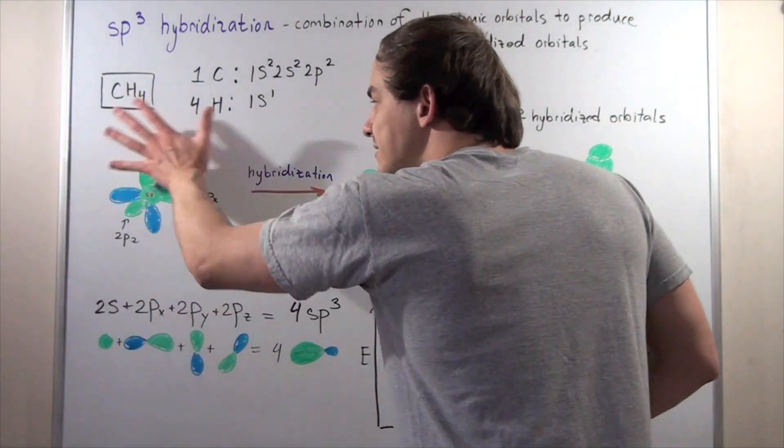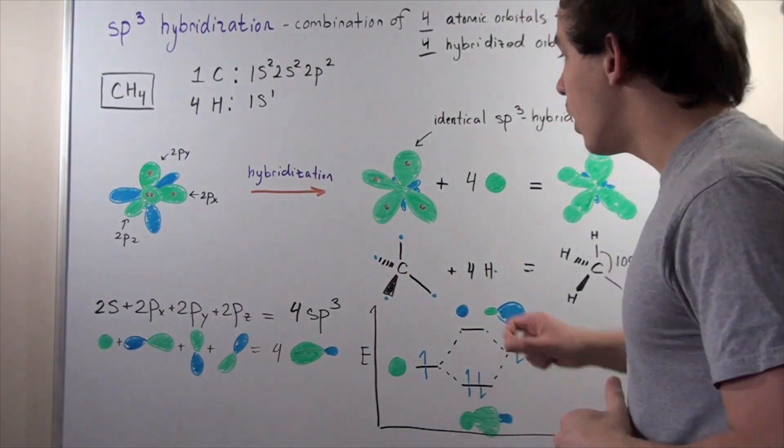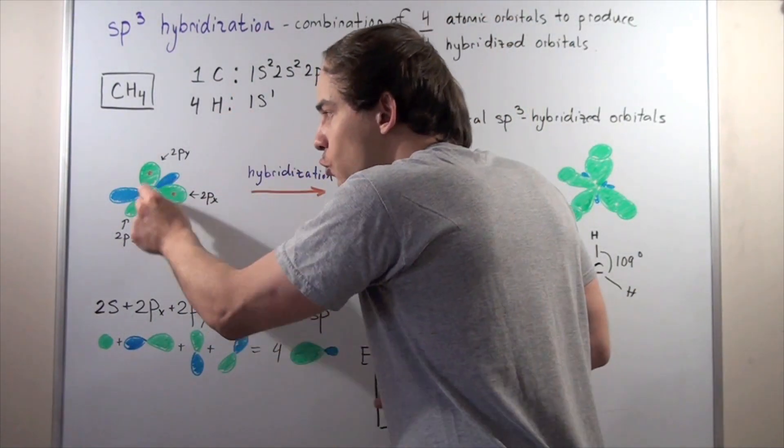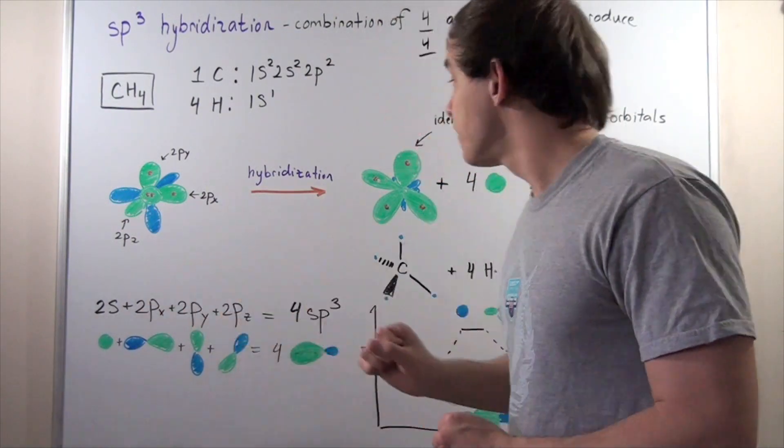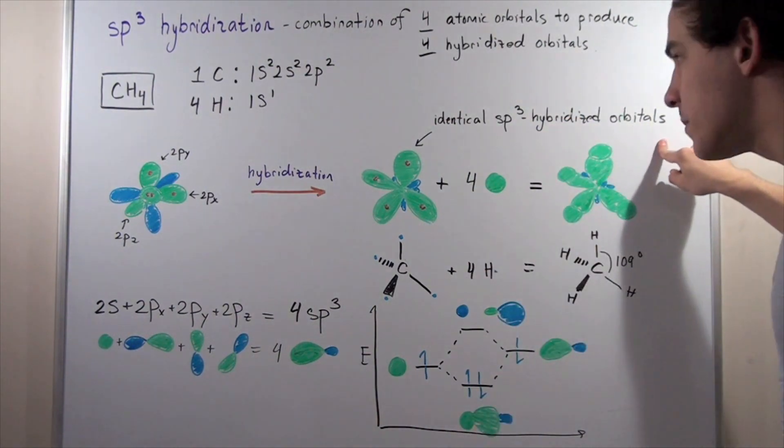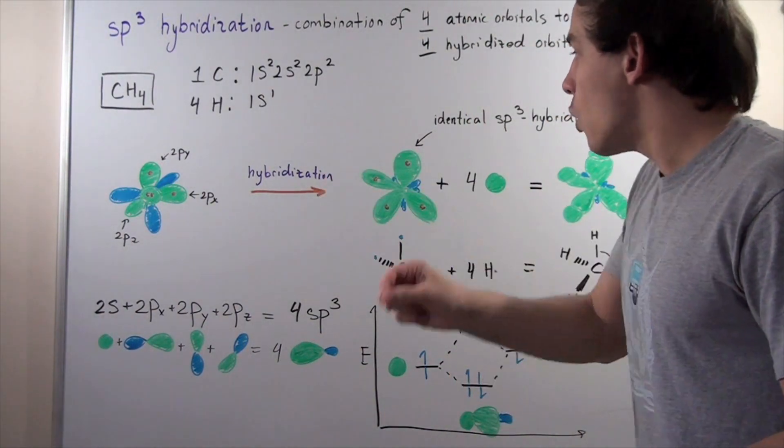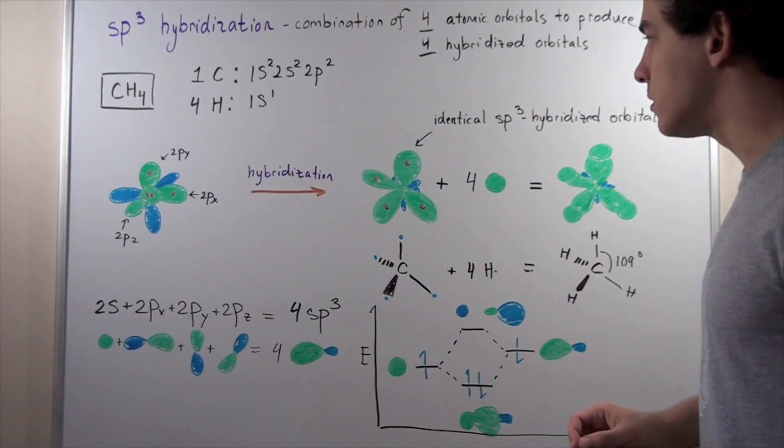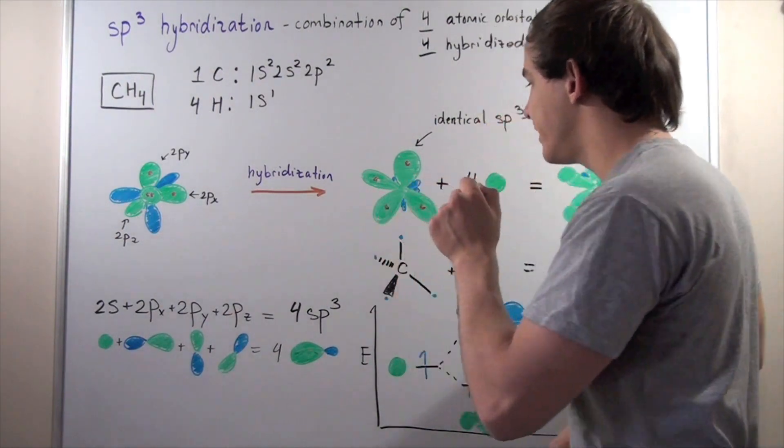This undergoes hybridization, and we get the following depiction. Now, our carbon atom no longer has that individual 2s and these individual 2px, 2py, 2pz. Instead, we have four identical sp3 hybridized orbitals. Since we have four unpaired electrons, each unpaired electron goes into each of the four identical sp3 hybridized orbitals. One goes into here, one goes into here, one in here, and one in here.